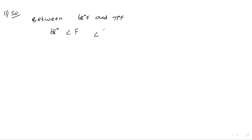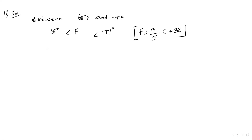Since F equals 9/5 C plus 32, we set up the compound inequality: 68 is less than or equal to 9/5 C plus 32, less than or equal to 77. We will convert the Fahrenheit bounds to Celsius by substituting the formula and solving for C.